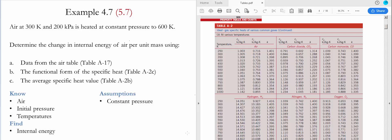The last step is to find the change in internal energy per unit mass using the average specific heat values from table A2B. For that, we find the average value of the temperatures between 300 kelvin and 600 kelvin, which gives us 450 kelvin. From there, you can see that the value of Cv is equal to 0.733 kilojoules per kilogram kelvin.